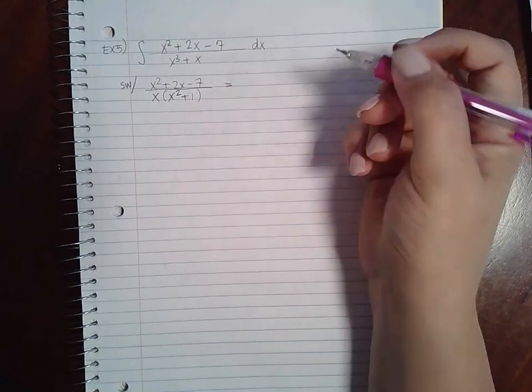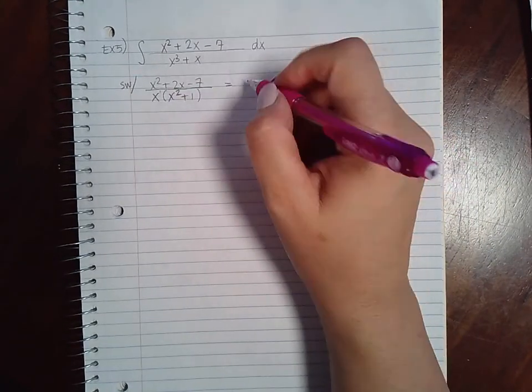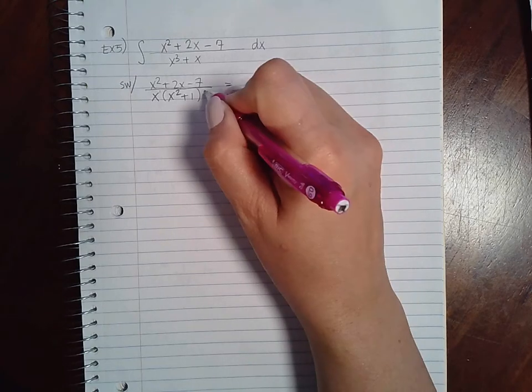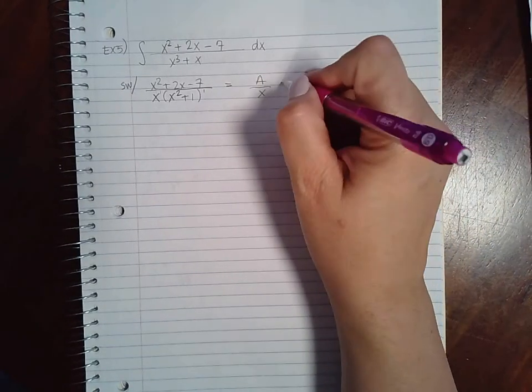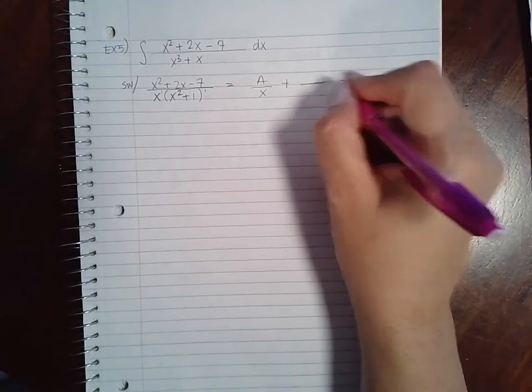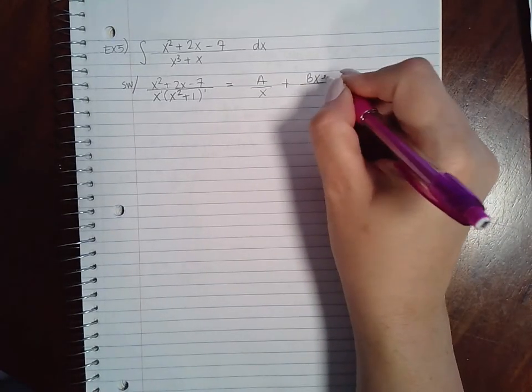So I need to start my setup. This exponent has an exponent of 1, so I only need one constant over x. This exponent is an exponent of 1, but notice that it's a quadratic function down here, which means I need a linear function in the numerator.